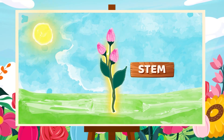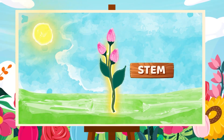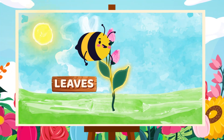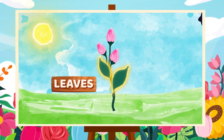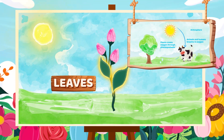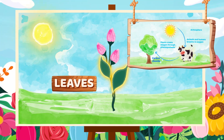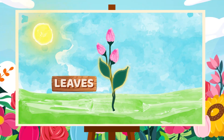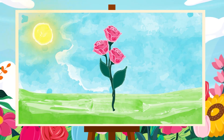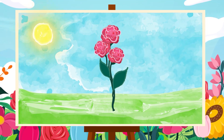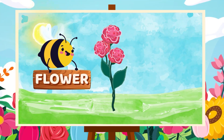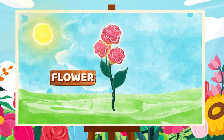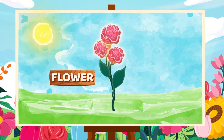Now these are the leaves. They absorb sunlight and convert carbon dioxide to oxygen. Next, this beautiful part that you see is called the flower, which is the reproductive organ of a plant.